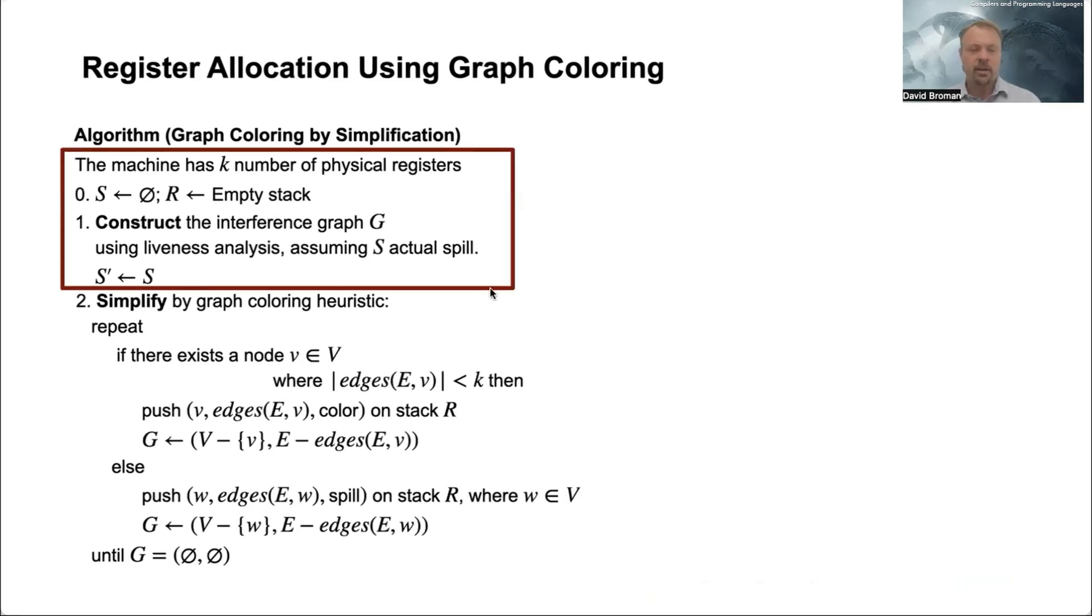Let's look at the first step here now. We have this running example that we looked at before, so we have four variables: x, y, n, and z. And let's assume that we have a computer now with just three physical registers.